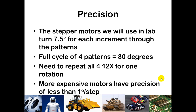The stepper motors we'll be using in this class turn 7.5 degrees per increment. Really good stepper motors used in industry — such as for dot matrix, laser, or inkjet printers — typically have a precision of less than one degree per step. One pattern moves the motor 7.5 degrees, so cycling through all four patterns gives 30 degrees. To do one full 360-degree revolution, you need to go through all four patterns a total of 12 times.